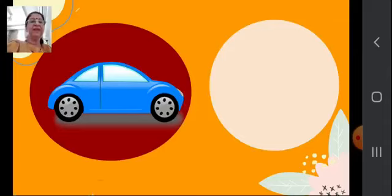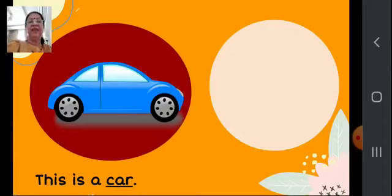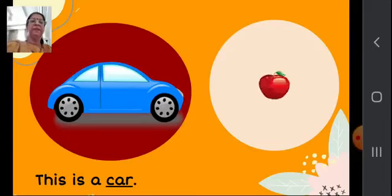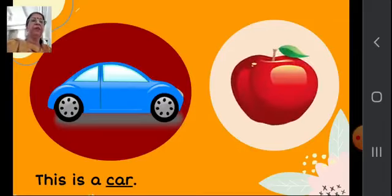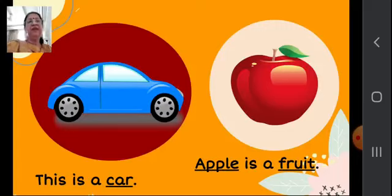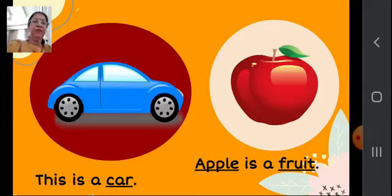This is a nice car (C-A-R), and I have underlined car. One more picture — what is this? An apple. Apple is a fruit. So I have underlined apple (A-P-P-L-E) and fruit (F-R-U-I-T).